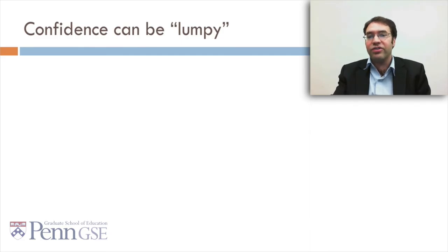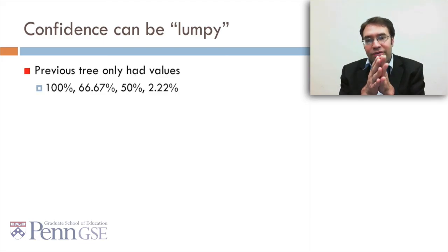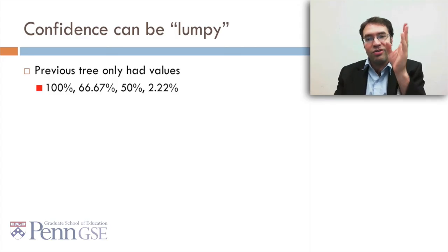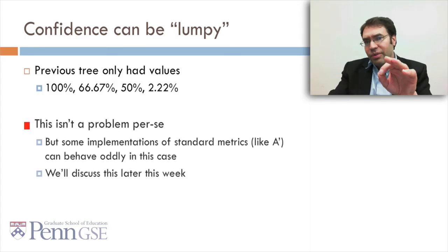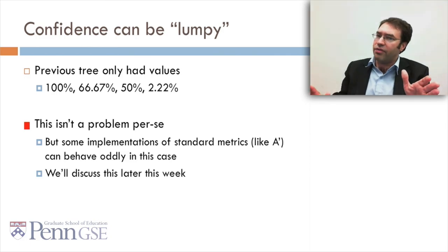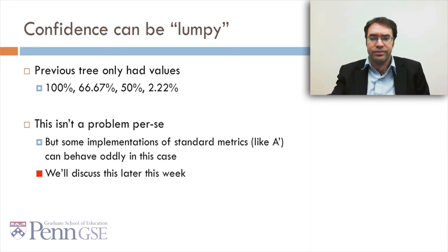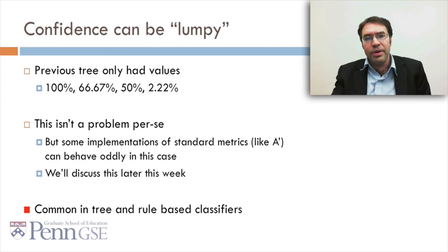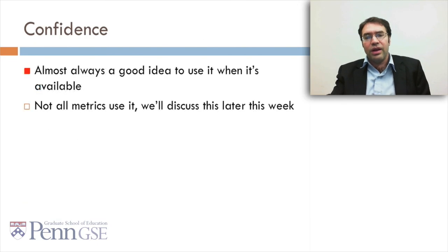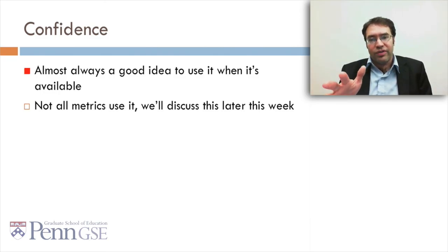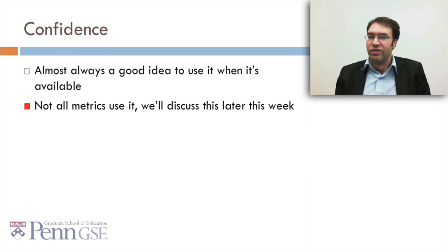Another thing worth thinking about is that confidences can be lumpy in the way detectors present them. The previous tree only had four values: 100%, 66.67%, 50%, and 2.22%. This isn't a problem per se — it's okay to have lumpy confidence. But some implementations of standard metrics, like A', can behave oddly in this case, and we'll discuss this later in the week. Lumpy confidence is common in tree and rule-based classifiers. It's almost always a good idea to use confidence when it's available, but not all metrics use this.